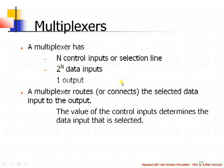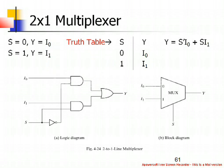The data which is present on one of the data inputs will be present on the output, and that selection depends on the control lines. Let us see one example of this multiplexer: the 2-to-1 multiplexer.